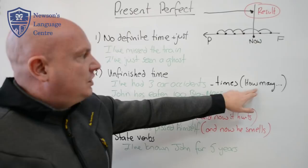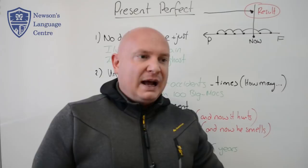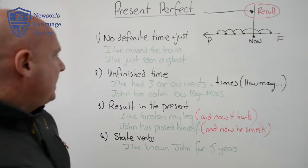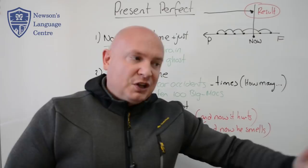Quite often you can ask a question with 'how many times' plus the present perfect: 'How many times have you had a car accident? How many times have you been to England? How many times have you visited your parents over the last year?' I can also say 'John has eaten 100 Big Macs' — and maybe 101, 102, 103. So it's unfinished time. It continues into the present and future.